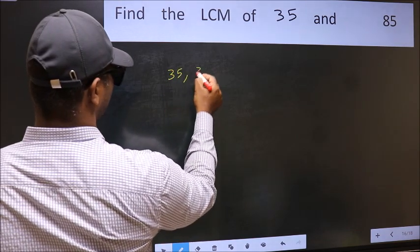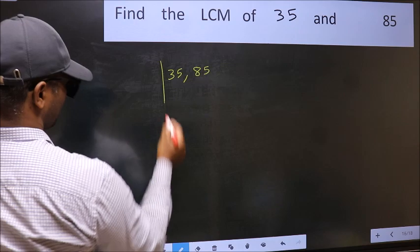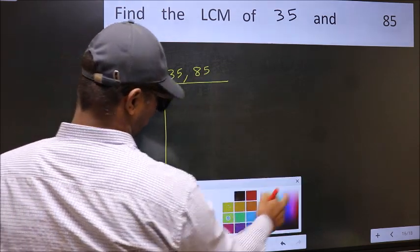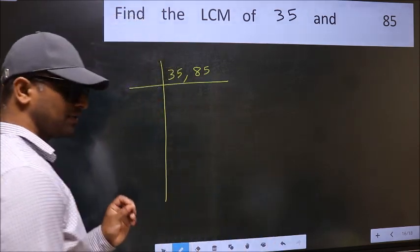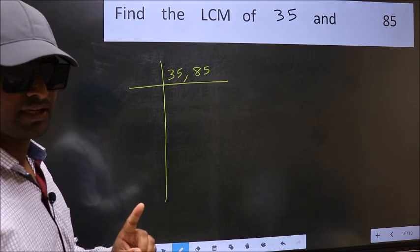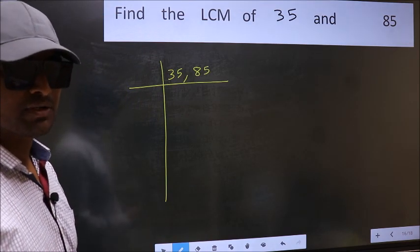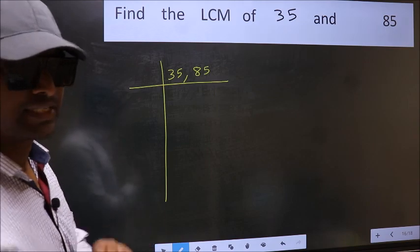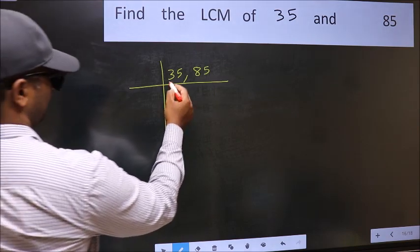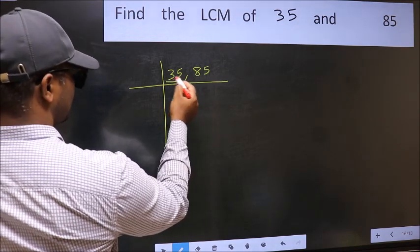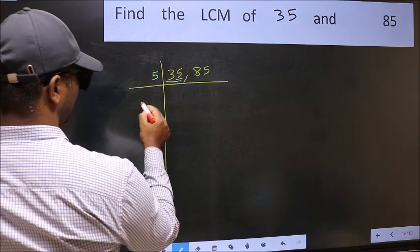35, 85. This is your step 1. Now you should focus on the first number, which is 35 here. In this number, last digit 5, so take 5.